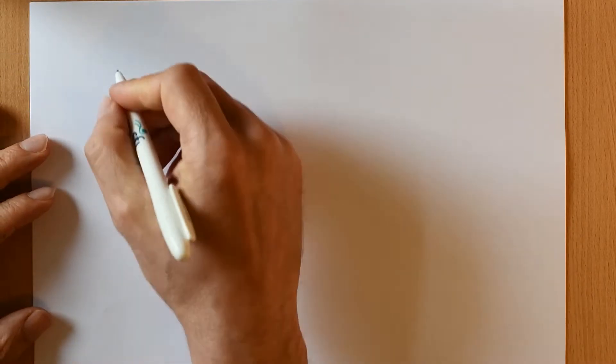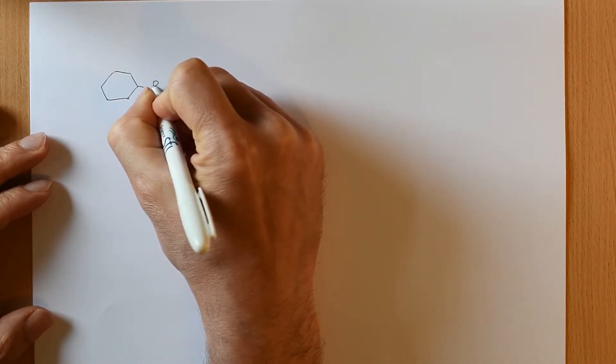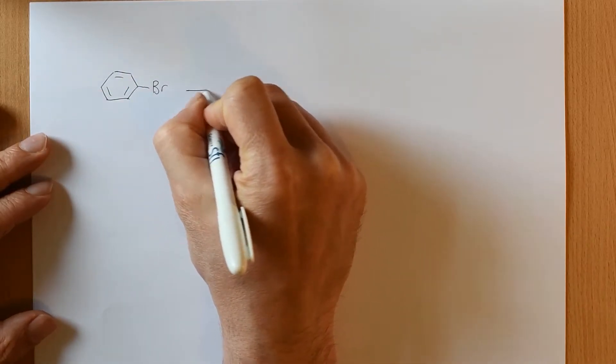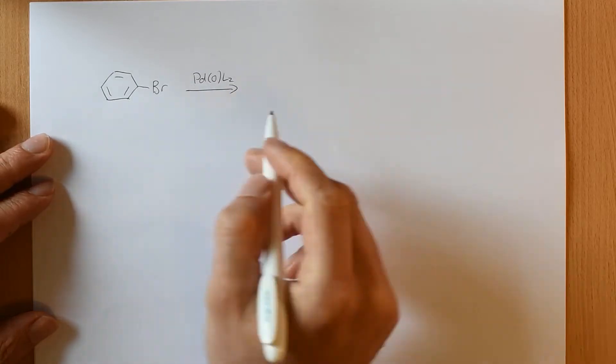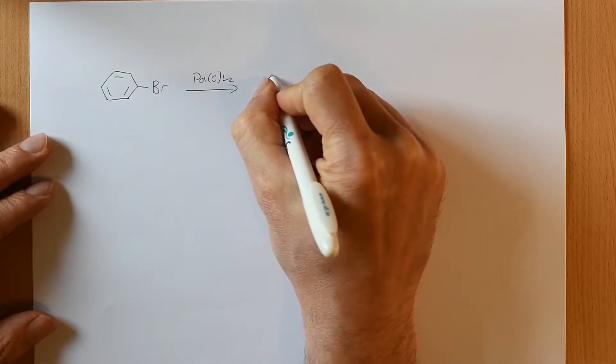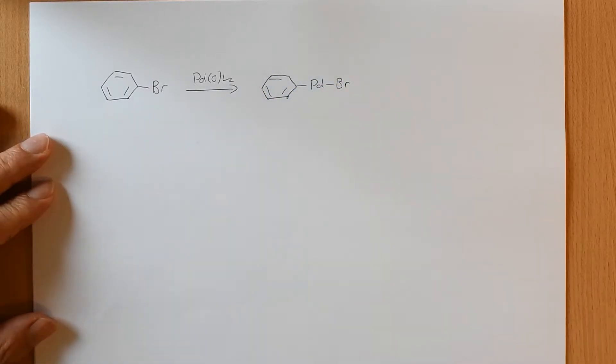Our first step is oxidative insertion. The typical example that I showed you was bromobenzene. You put in your palladium zero with two ligands on it, or a bidentate ligand, and you end up with palladium-carbon bond, halogen bond.